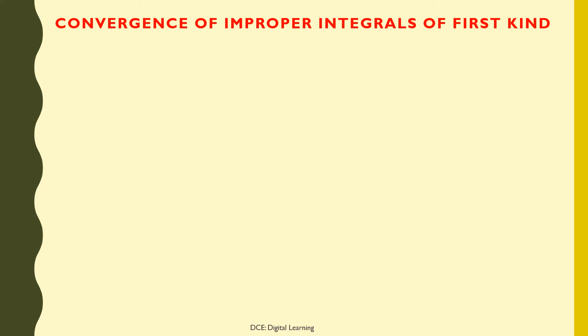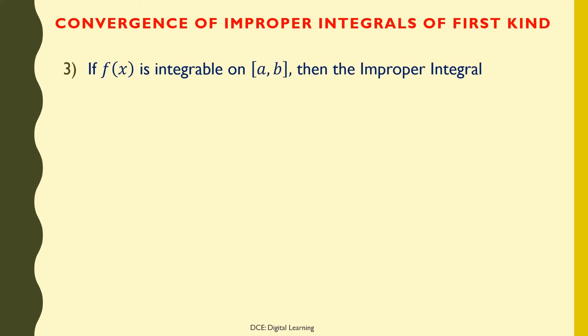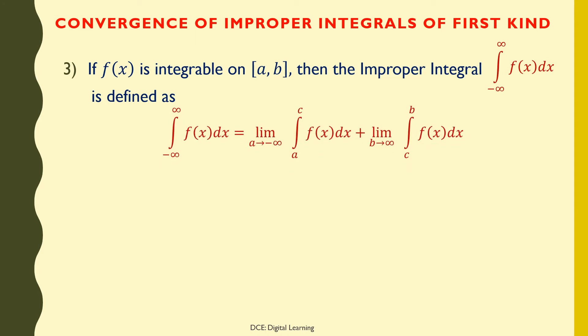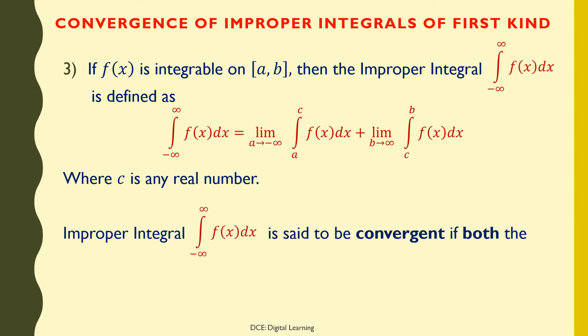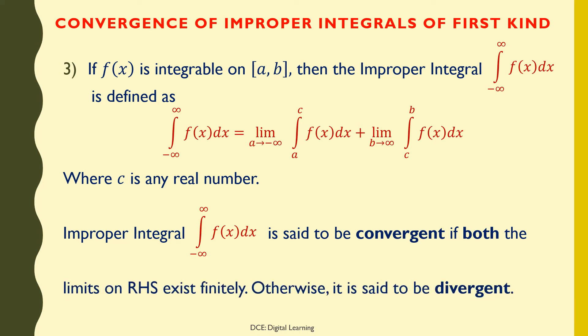If f(x) is integrable on [a,b], then the improper integral of f dx from minus infinity to infinity is defined as the limit of the integral of f dx from a to c as a tends to minus infinity, plus the limit of the integral of f dx from c to b as b tends to infinity, where c is any real number. This improper integral is convergent if both limits on the right-hand side exist finitely; otherwise, it is divergent.